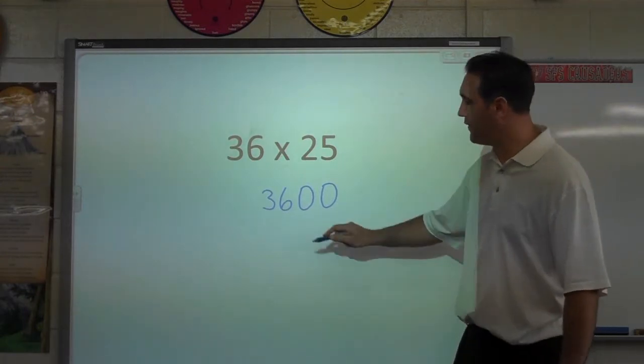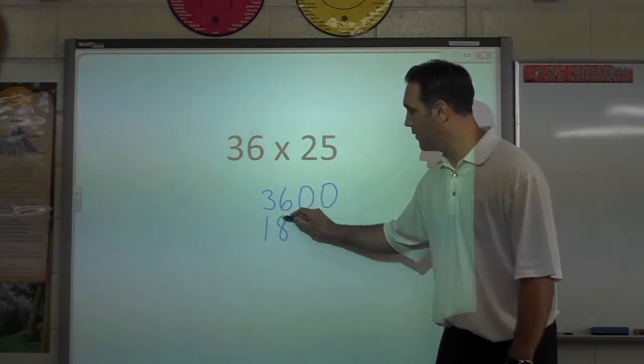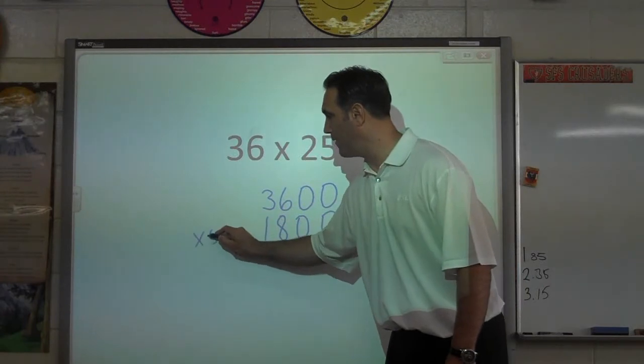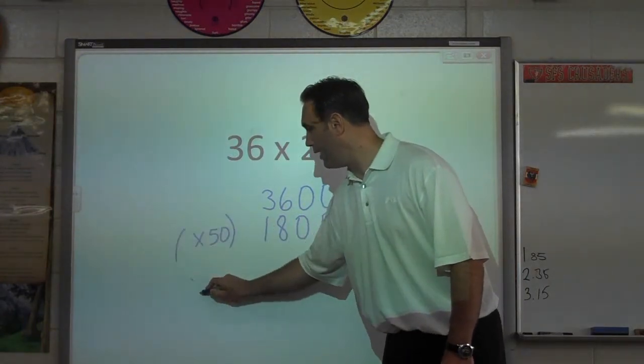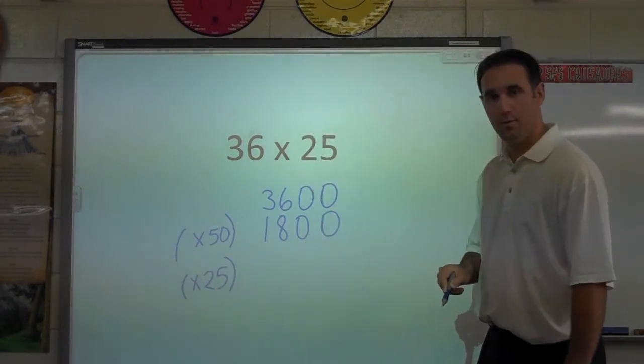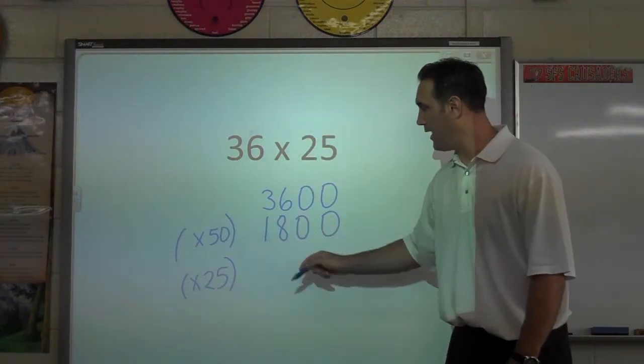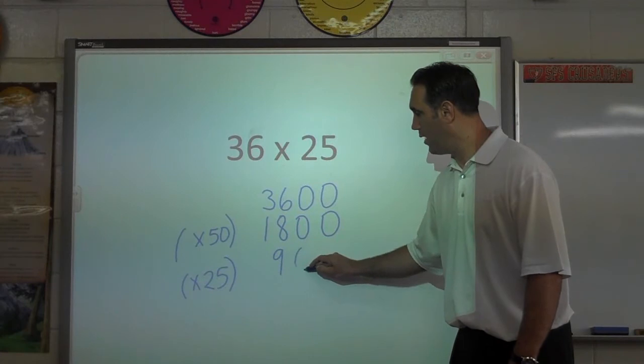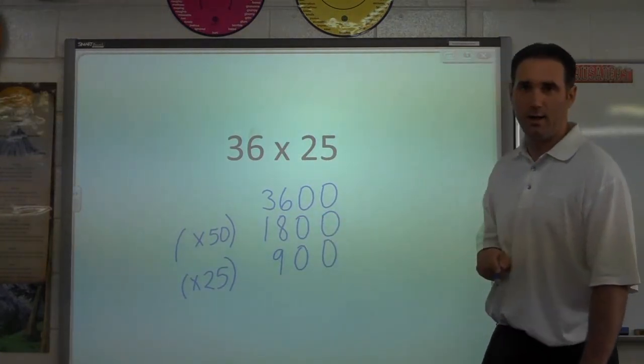To multiply by 50, we're just going to halve it. I'm just going to put here, times by 50. And if we want to multiply by 25, we just halve it again. Half of 18, half of 1800, 900.